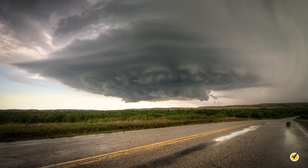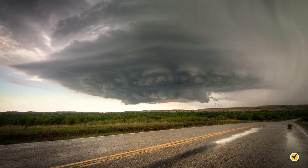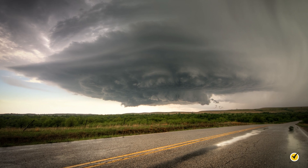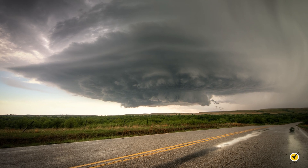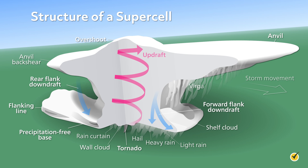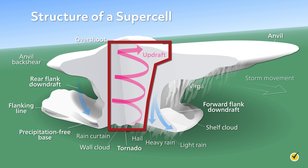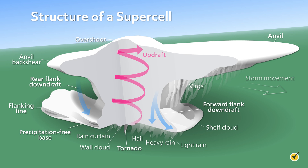This is what a supercell looks like in real life. Let's dissect this a bit and see what's going on inside. One of the main features of a supercell is this persistent updraft here in the center. An updraft is a column of upward moving air. You'll notice that this air is rotating, which is another very important feature that makes it different from a normal thunderstorm.